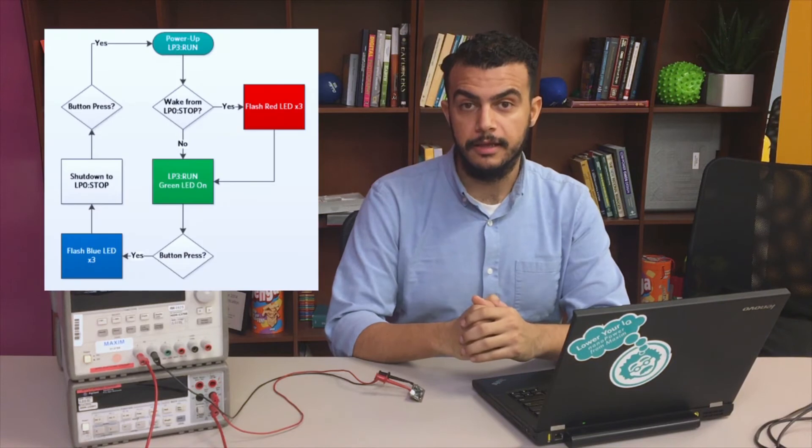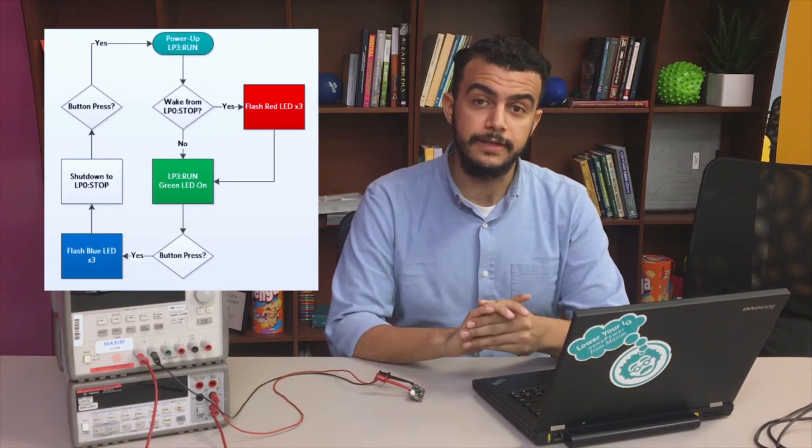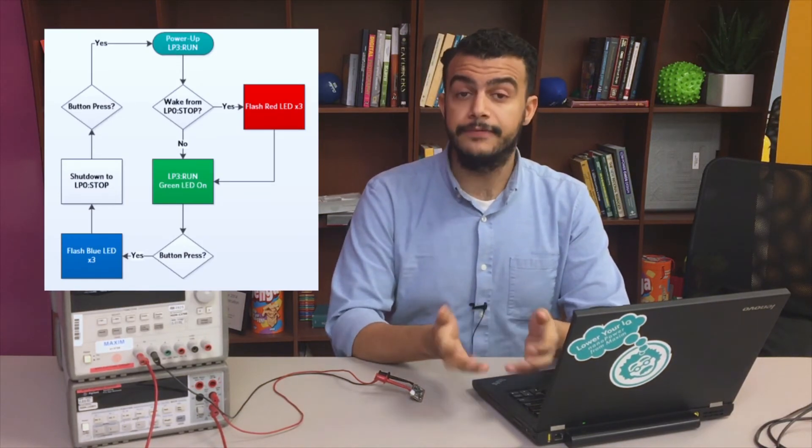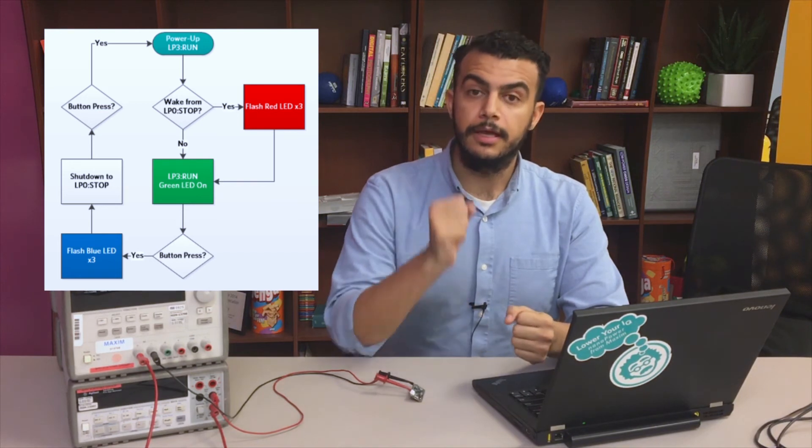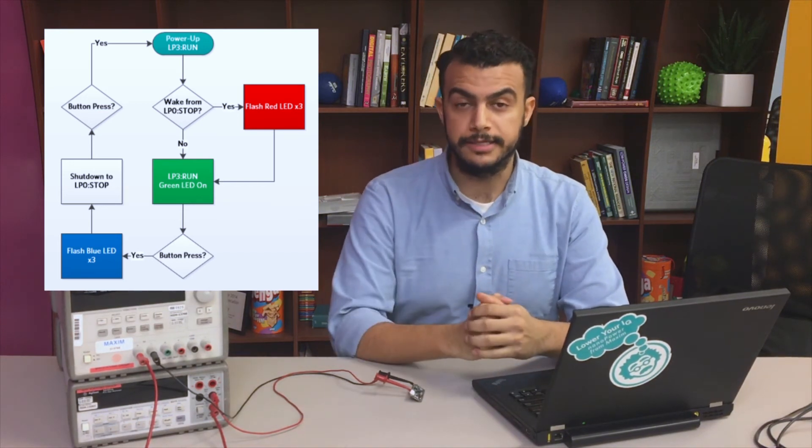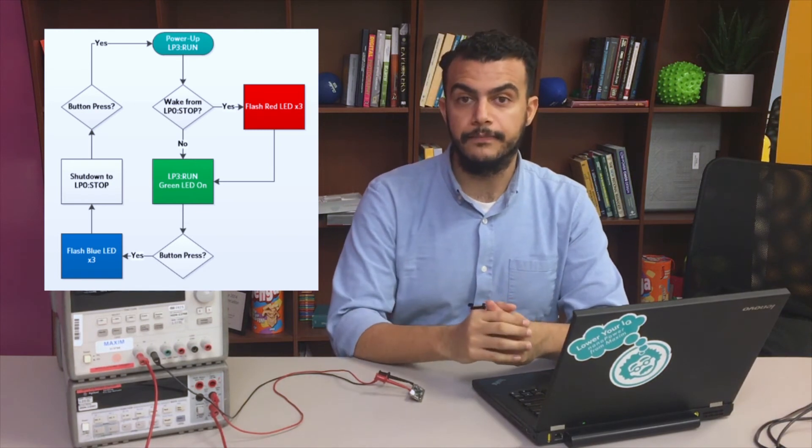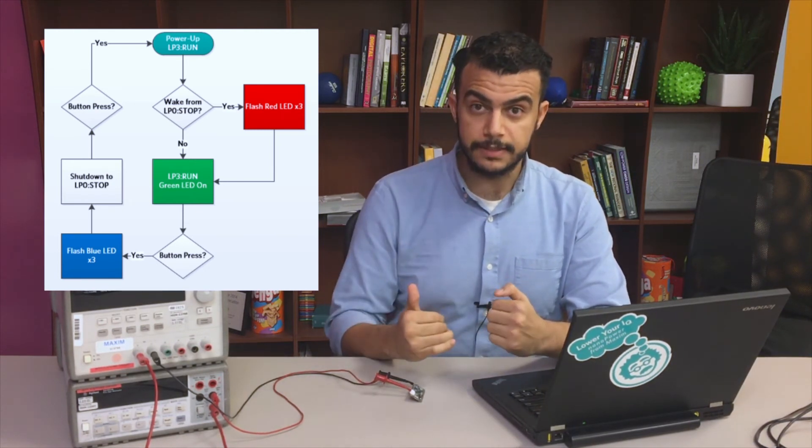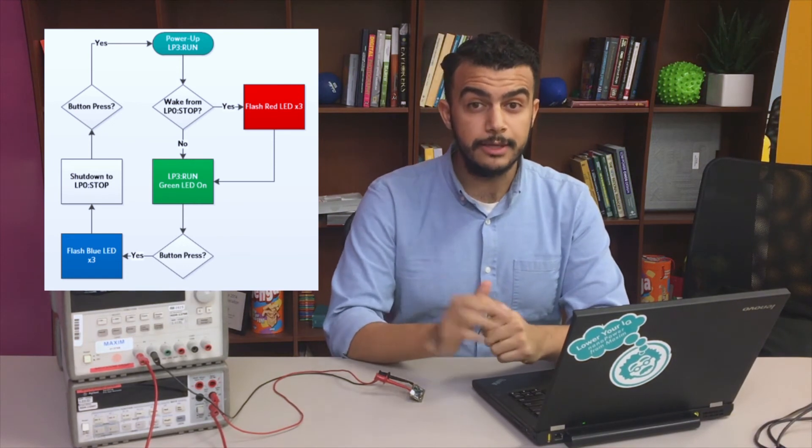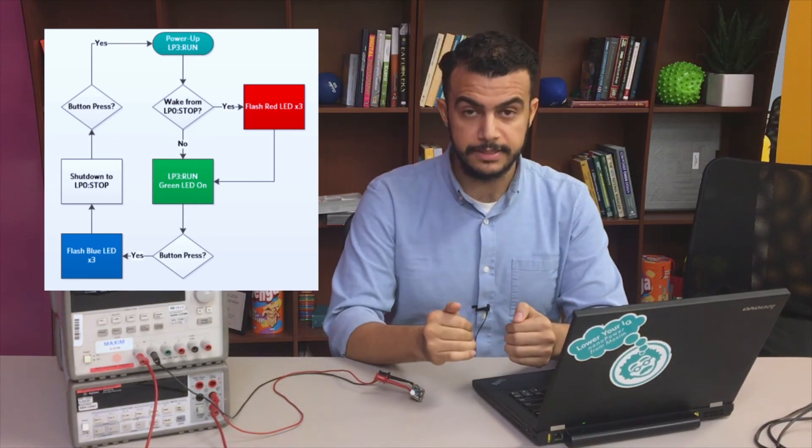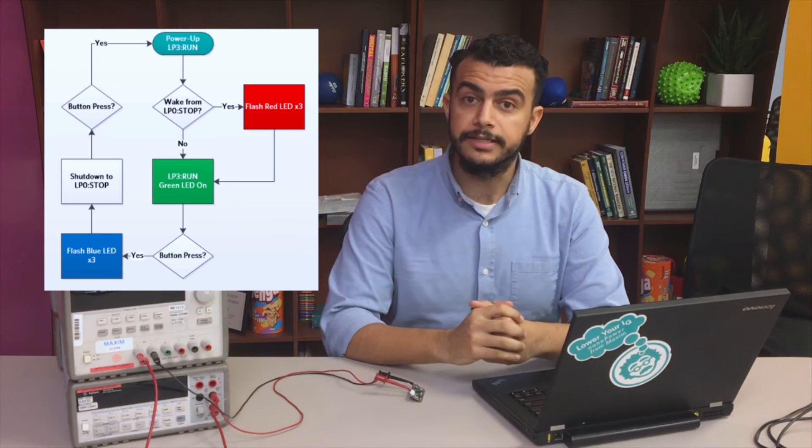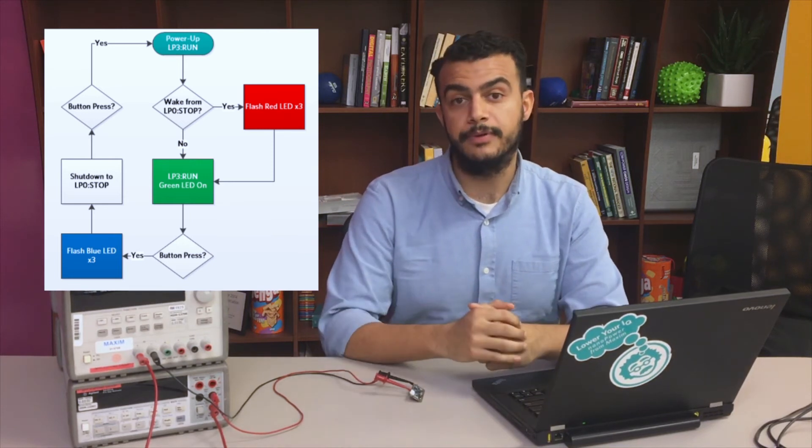It's a pretty simple program. When the microcontroller powers up, it doesn't know if it woke up from deep sleep or if power was freshly applied. The first thing it does is check for the deep sleep wake-up flag, and if it's actually coming out of deep sleep, it will flash the red LED three times before turning fully on and keeping the green LED on. When I push the button for it to go back into deep sleep, it'll blink the blue LED three times and then go into deep sleep. Next time I press the button, the same process will happen over again.